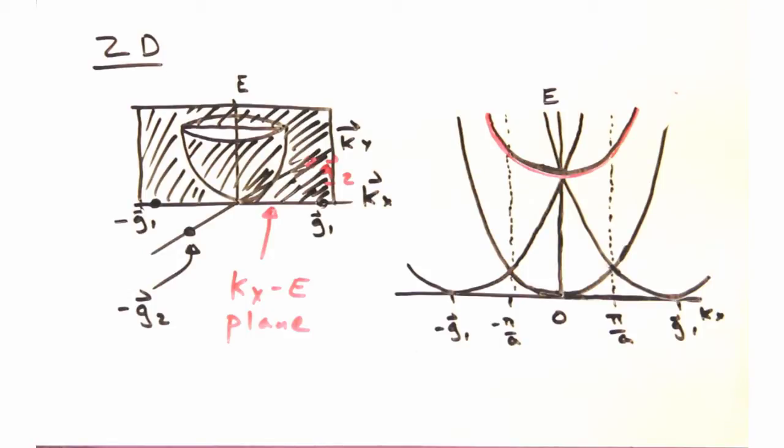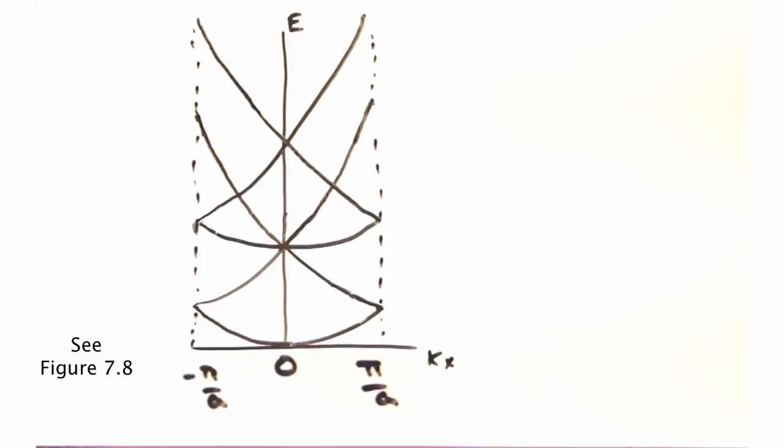Seems like we could keep adding bands at higher and higher energies by just including parabolas that are farther away. Totally. But for the sake of clarity today, we're just going to call it good with the following parabolas along Kx.